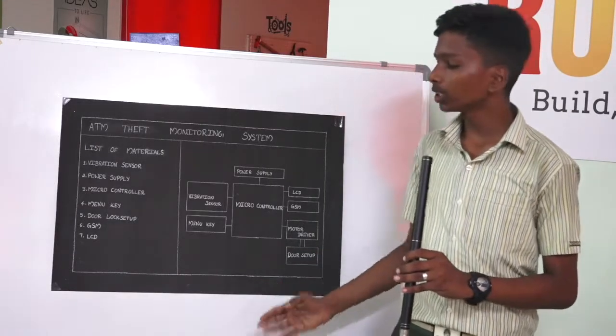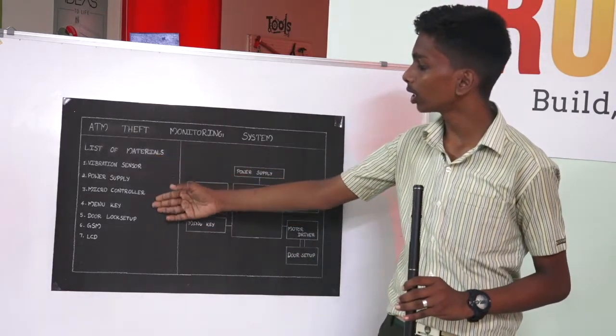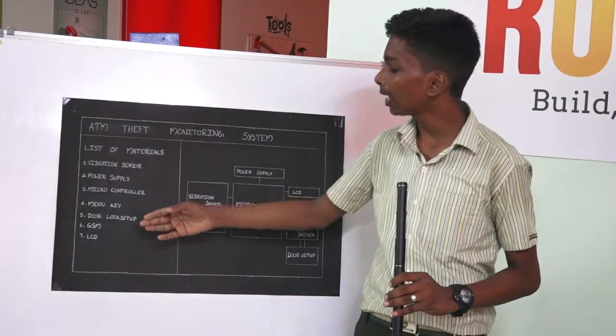In our project, we are using seven main components. They are vibration sensor, microcontroller, menu-key, door lock setup, GSM, and LCD.